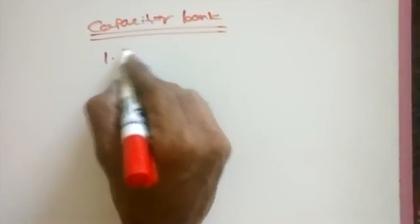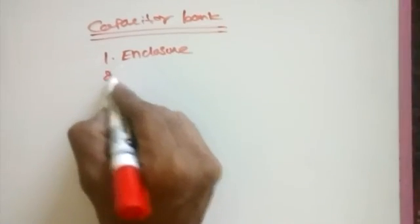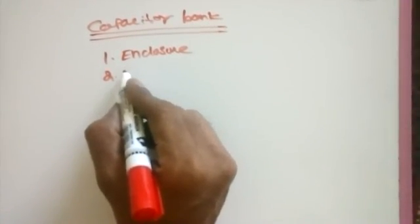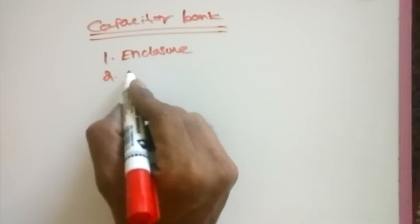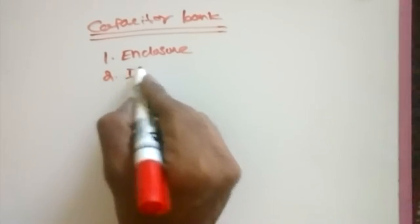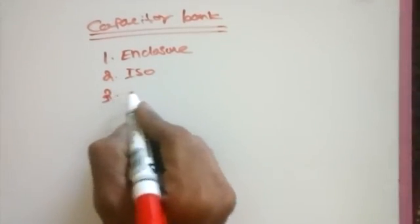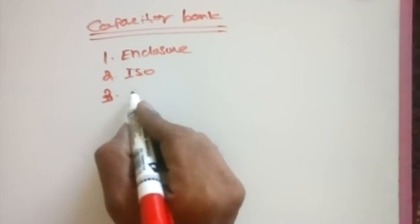First one is enclosure. Second one is incoming device, that means isolator or MCCB, any of the thing you choose as per your convenience. I choose isolator. Third one is how much kVR you needed, that means 20 kVR or 50 kVR.